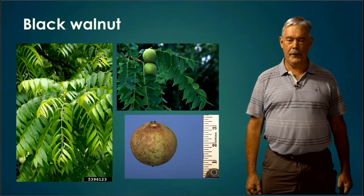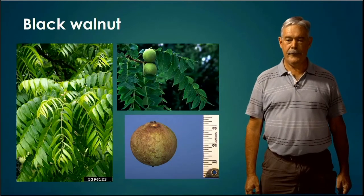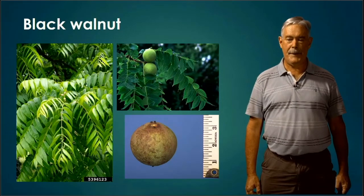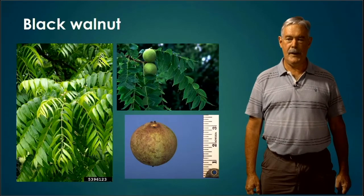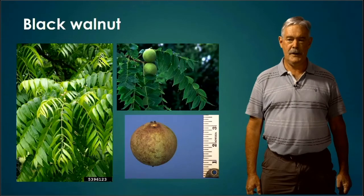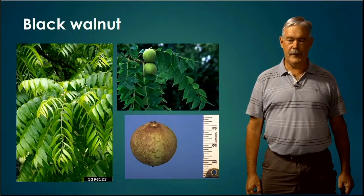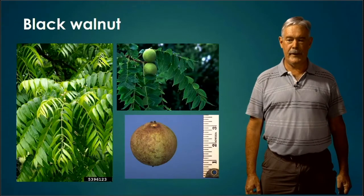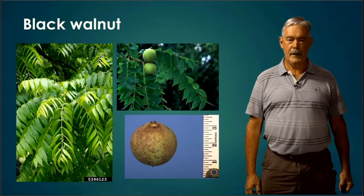Black walnut is a little bit like pecan. The way I tell the difference is by the number of leaflets on the compound leaves. Black walnut has compound alternating leaves with a bunch of leaflets. Also, before the walnut comes out of the shell, it's a big round fruit.